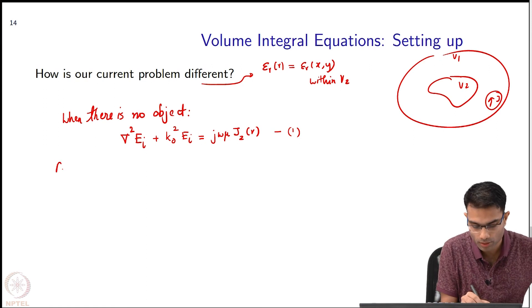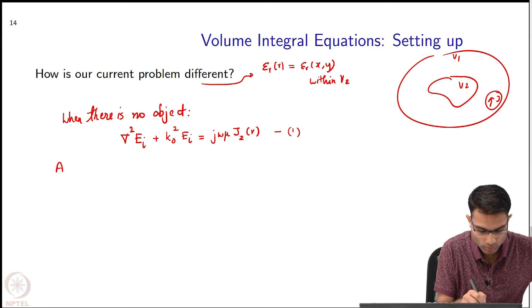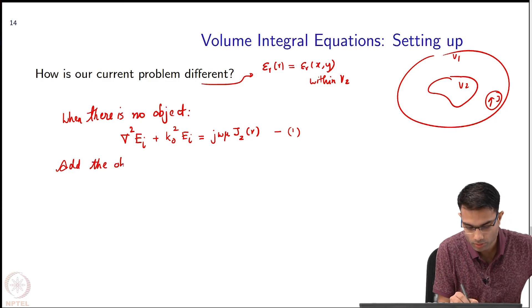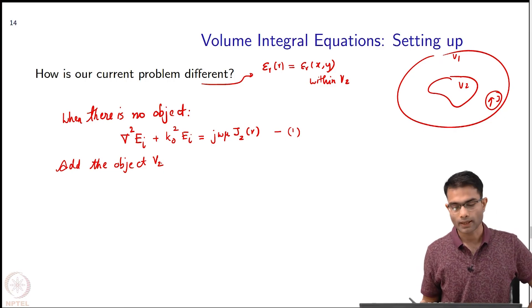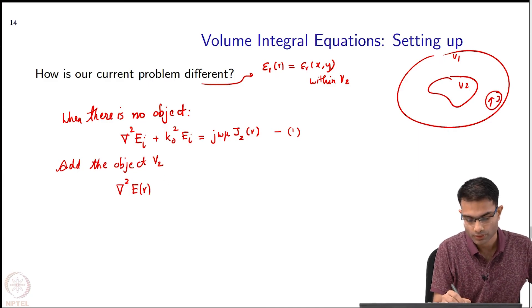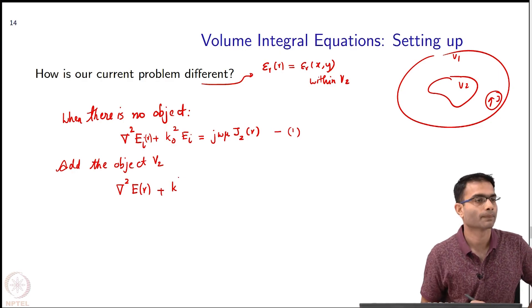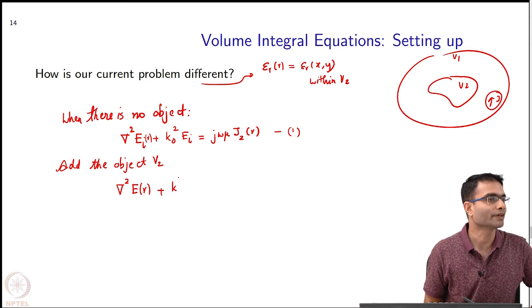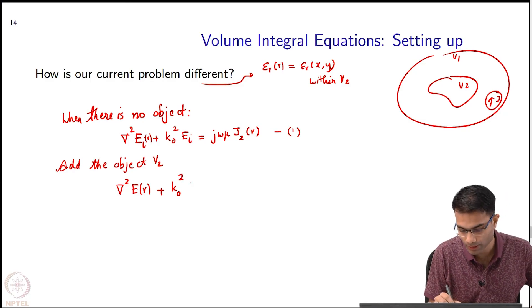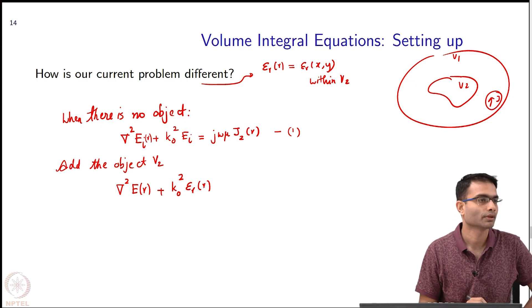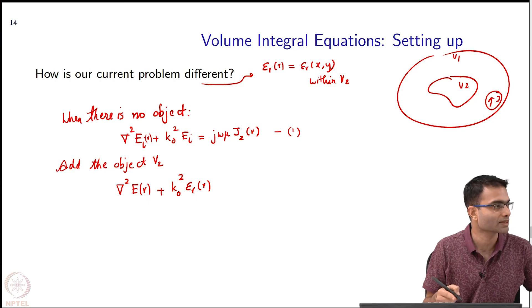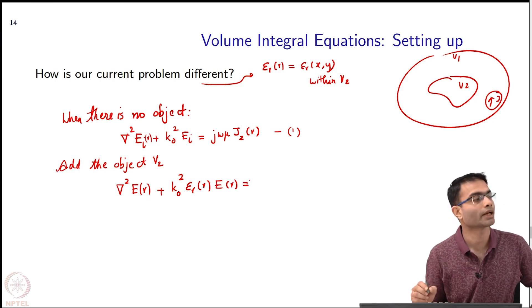Now when I add the object, let us add the object, in this case it is V2. What happens now? I will say the same operator remains similar. Del squared now E of r, this was also r, plus now what do I write over here? The permittivity of the medium enters into this k term. Can I still write k naught? I cannot write. I have to modify that. It becomes the relative permittivity comes in over here. When we derived the wave equation remember there was an epsilon, we wrote it as k r or we can write it more precisely like this, and E r.